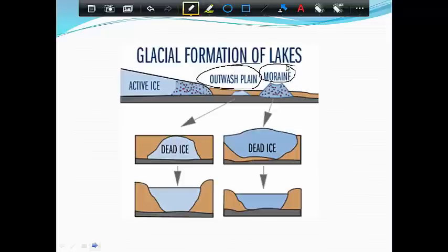So you want to make a note for yourself, whether it's through a diagram or just by writing about these two things. There are two ways that glaciers can form lakes. The first is an outwash plain, which is a chunk of ice that's been left behind. The second is a moraine, which is ice and sediment that's been left behind.